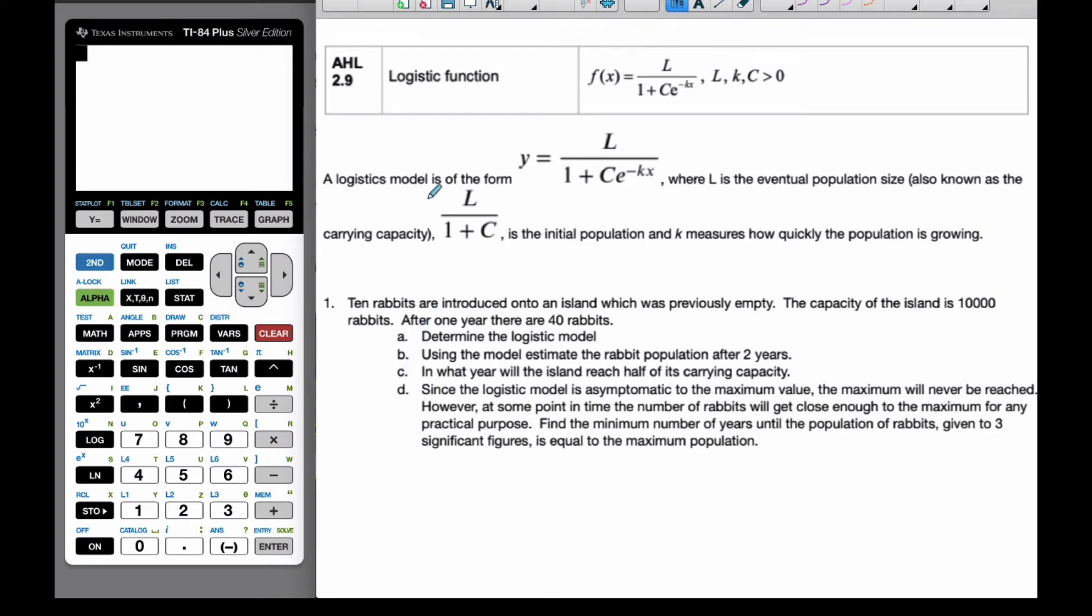Okay, so in this video we're still talking about the logistic function, and this is what you'll find in your formula booklet. It's in the HL section, and this is the particular equation you'll be given where L, K, and C are positive. I know that L is the eventual population size, the upper asymptote, and it's the carrying capacity.